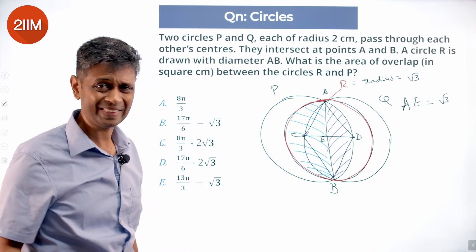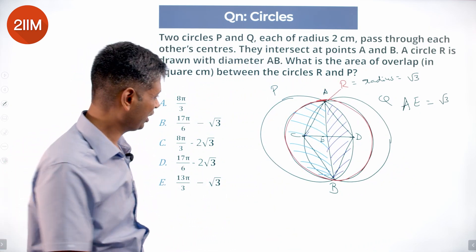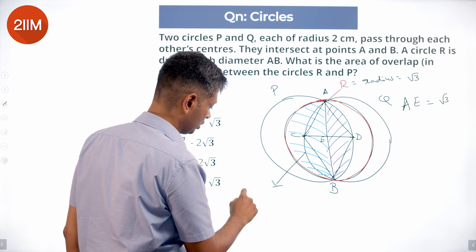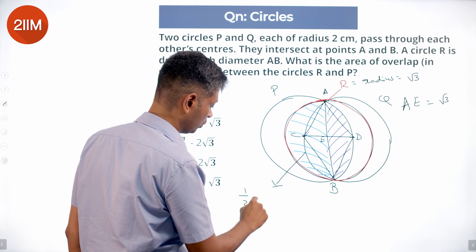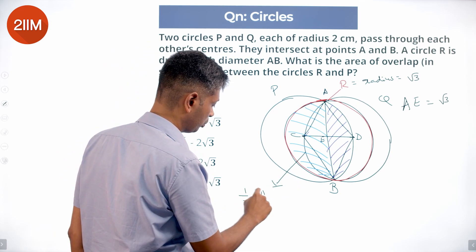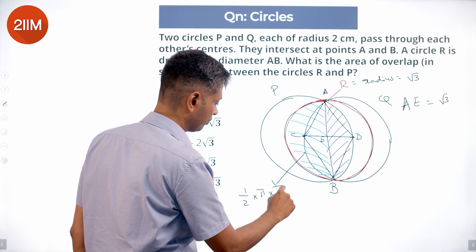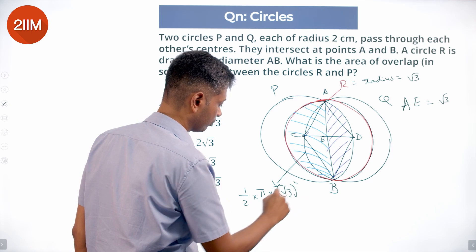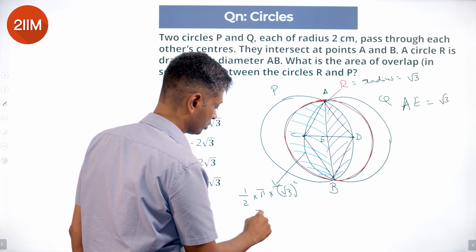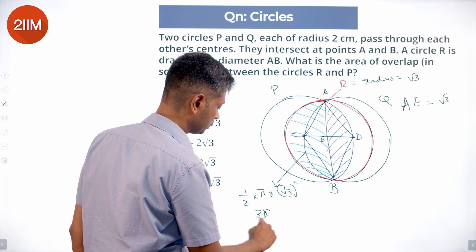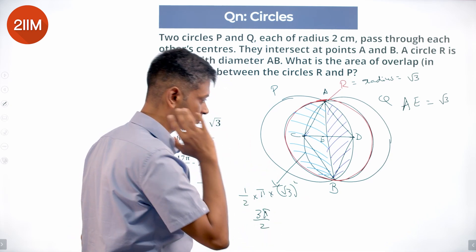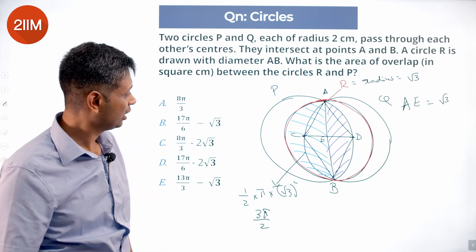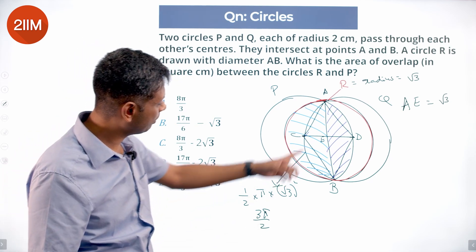With that we can find the semicircle area: (1/2) × π × (√3)² = 3π/2. That part is done. Now let's look at the purple shaded area, which is the segment of P.